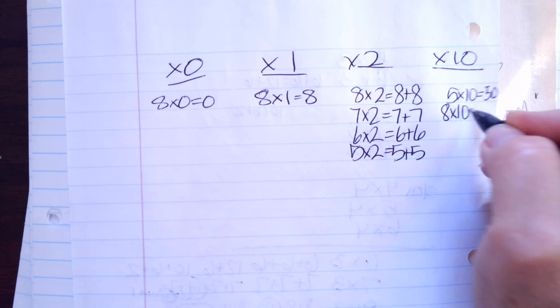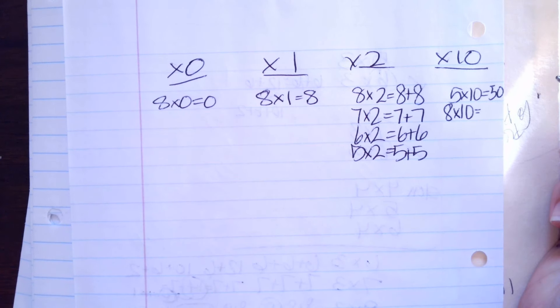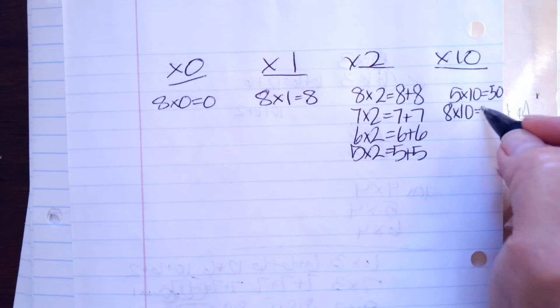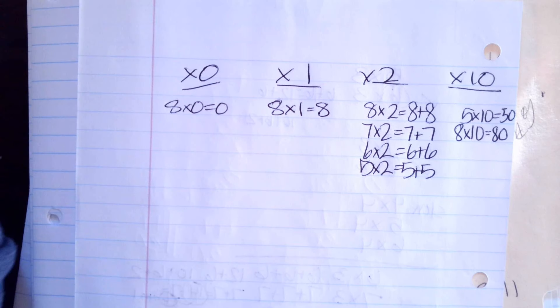Anything times 10 equals the number but a 0 back in the back. Yep. So it's 80.